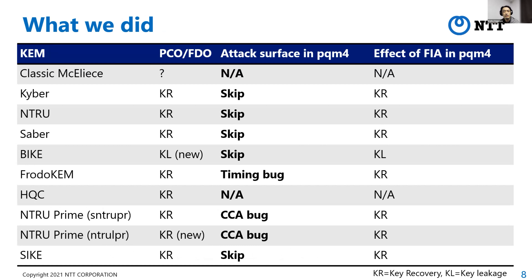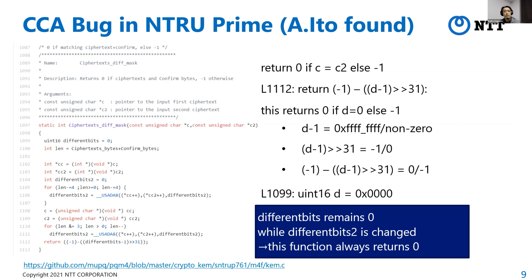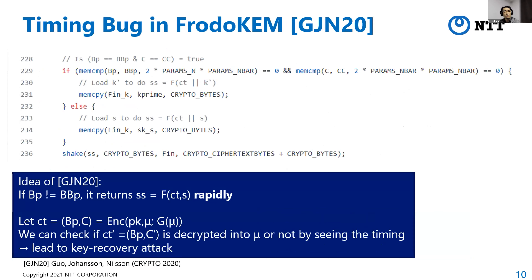We also survey the attack surface in PQM4. For example, NTRU Prime has a CCA bug — the cipher digit comparison function always returns zero due to the bug instead of minus one when the ciphertext is not equal. For FrodoKEM, it is well known that Guo, Johansson, and Nilsson proposed a timing bug attack against FrodoKEM, but it remains in PQM4. The next one is the fault injection attack. Saber, Kyber, and NTRU have some structures which use conditional move to replace critical information with a random sheet. This CMov function is coded in assembly, and if we skip this instruction by injecting a fault, it returns H(x_ram) always.